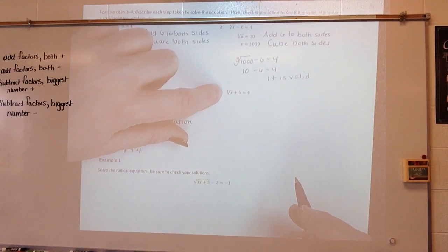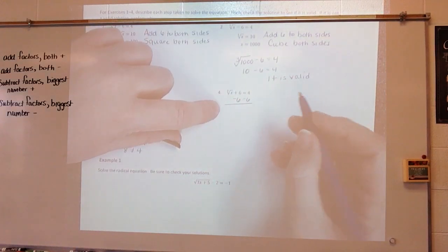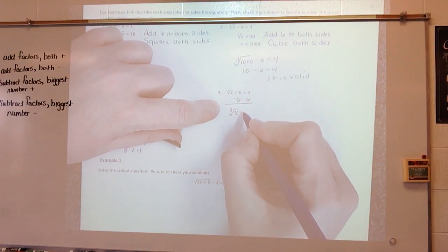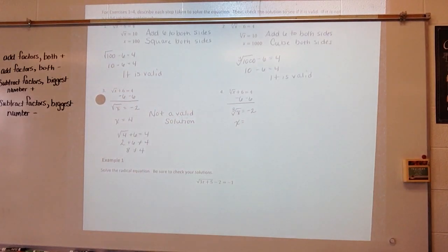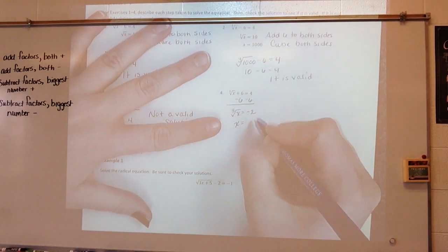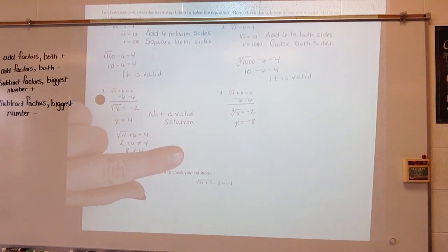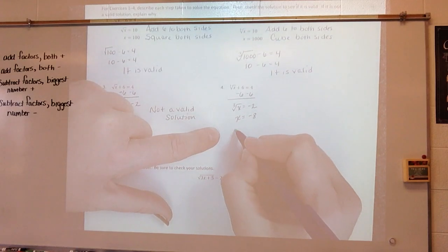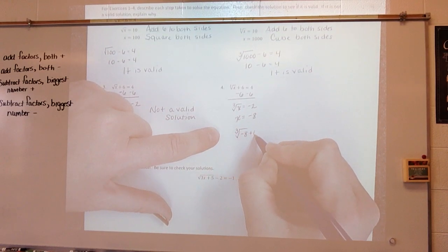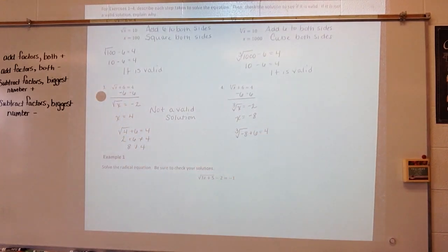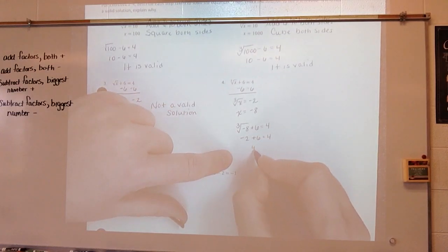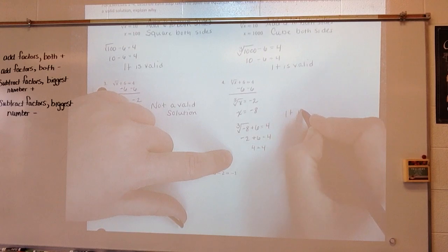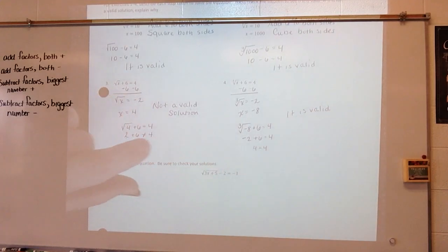Cube root of x plus 6 equals 4. Subtract 6 to get the cube root of x equals negative 2. I cube everything: x equals negative 2 times negative 2 is 4, times negative 2 is negative 8. Is negative 8 a valid solution? The cube root of negative 8 plus 6 equals 4. The cube root of negative 8 is negative 2, plus 6 equals 4. 4 does equal 4, so it is valid.